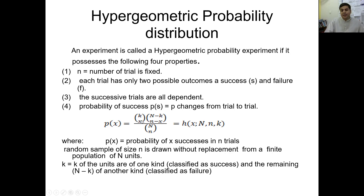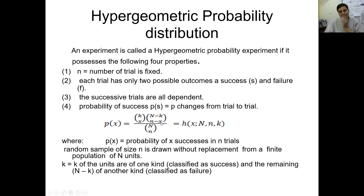In the hypergeometric probability distribution function, k is the number of units of one type classified as success — just like we use p for success in binomial, we use k here. x represents the number of successes. n minus k represents those classified as failure. And n minus x is the sample size minus the random variable. p(x) is the probability of x successes in n trials.